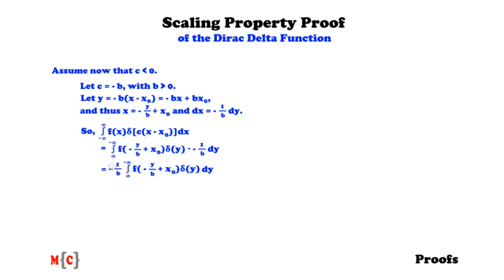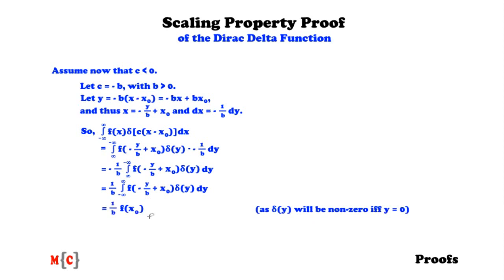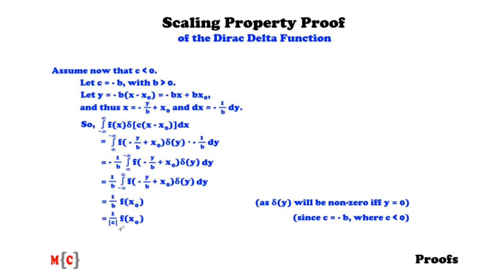Getting rid of the minus sign outside the integral causes the integration domain to flip again, so we again integrate from minus infinity to infinity. We observe that delta(y) is only non-zero if y equals zero, so the result of the integral is f(x-null), giving 1 over b times f(x-null). Replacing b with c — remembering c is less than zero, b is greater than zero, and c equals minus b — this equals 1 over the absolute value of c times f(x-null) when c is less than zero.